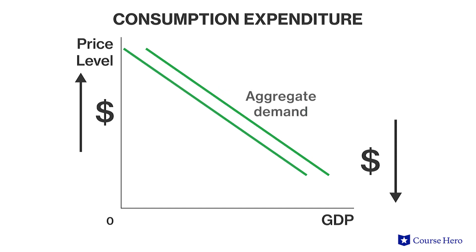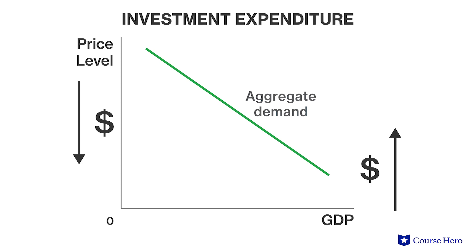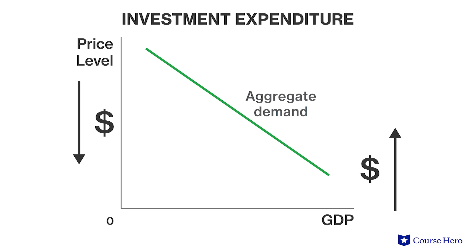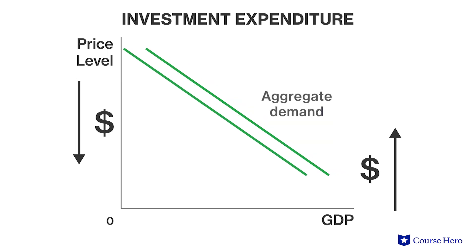The second factor that creates a shift in the aggregate demand curve is investment expenditure. When investment expenditure increases, the aggregate demand curve will shift to the right. When investment expenditure decreases, the aggregate demand curve will shift to the left.